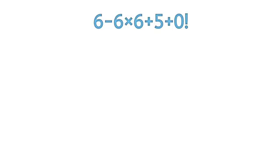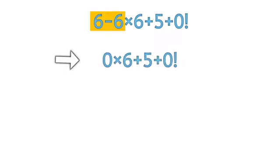We've seen a lot of people do it the following way. Look, 6 minus 6 is 0, right? It's going to be 0 times 6 plus 5 plus 0 factorial. Then we'll see, in mathematics, 0 times 6 gives 0. And it becomes 5 plus 0, which equals 5. So the answer in this case will be 5.